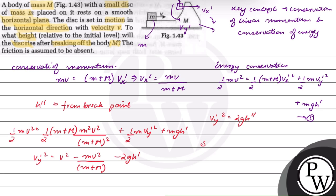So 2gh double dash plus 2gh single dash will be equal to v² minus mv²/(M+m).